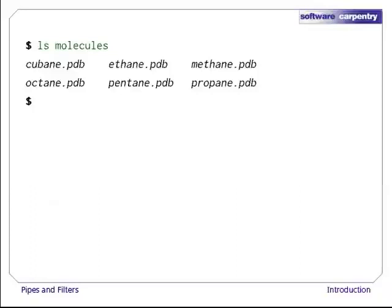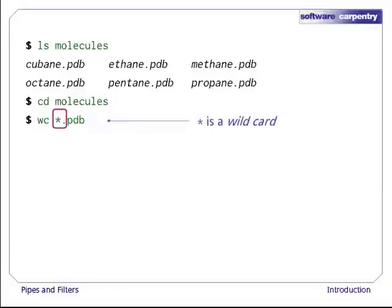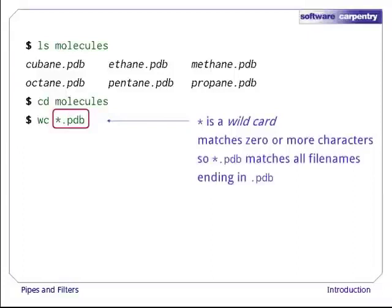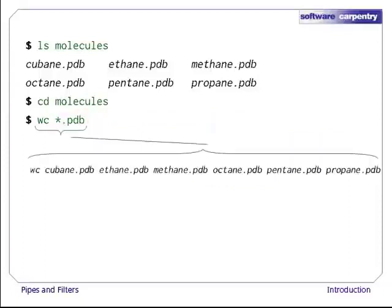We'll start with a directory called molecules that contains six files describing some simple organic molecules. The .pdb extension indicates that these files are in protein databank format, a simple text format that specifies the type and position of each atom in the molecule. Let's go into that directory with cd and run the command wc *.pdb. The star in *.pdb is a wildcard character — it matches zero or more characters, so the shell expands the expression *.pdb to be the complete list of .pdb files.